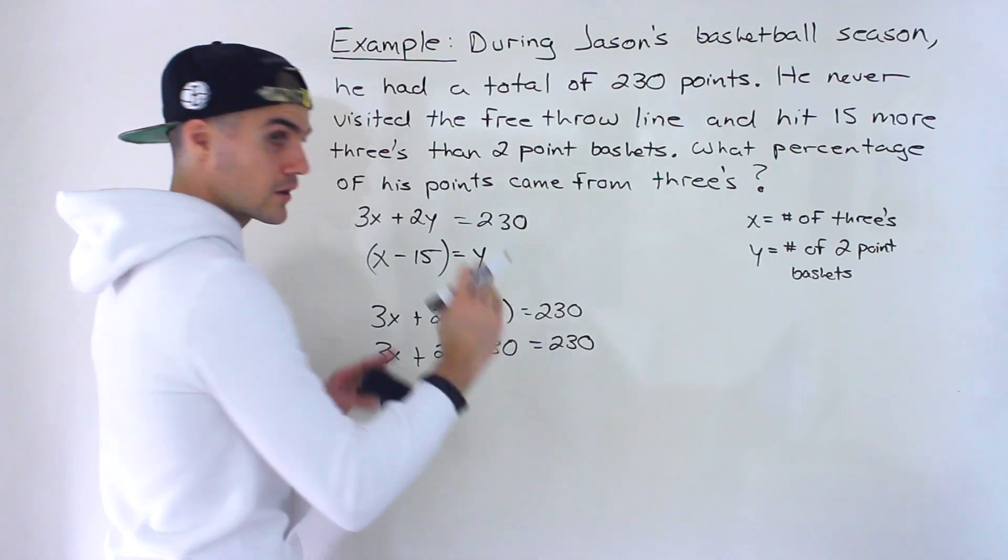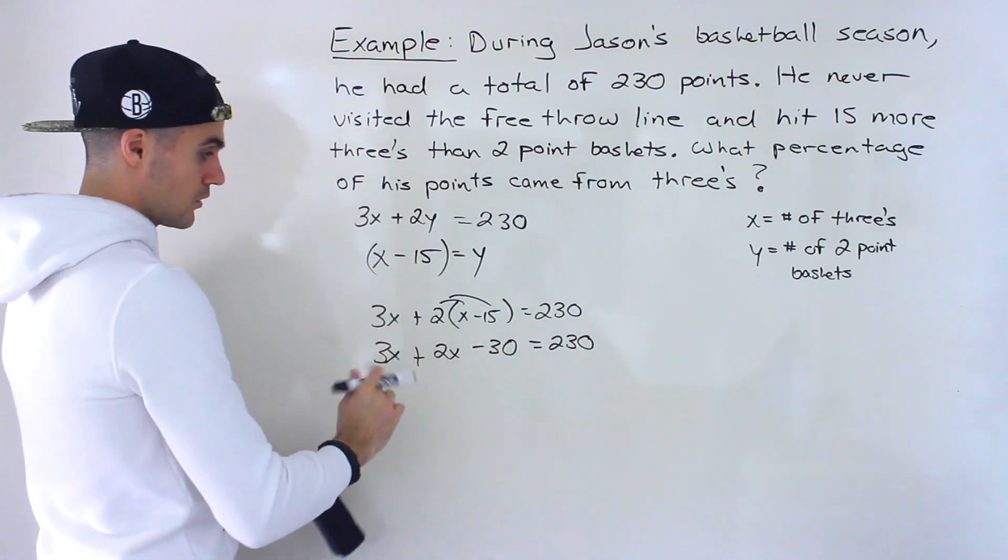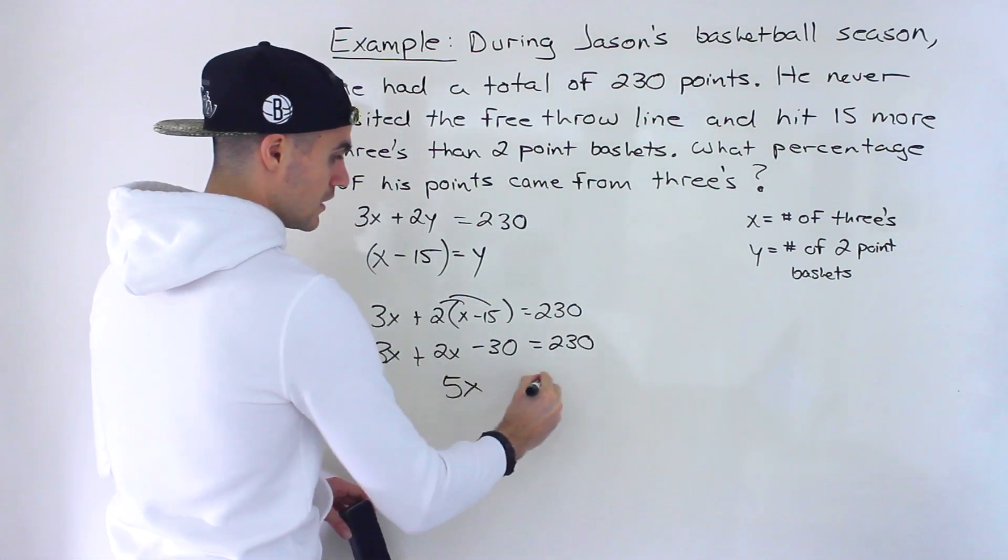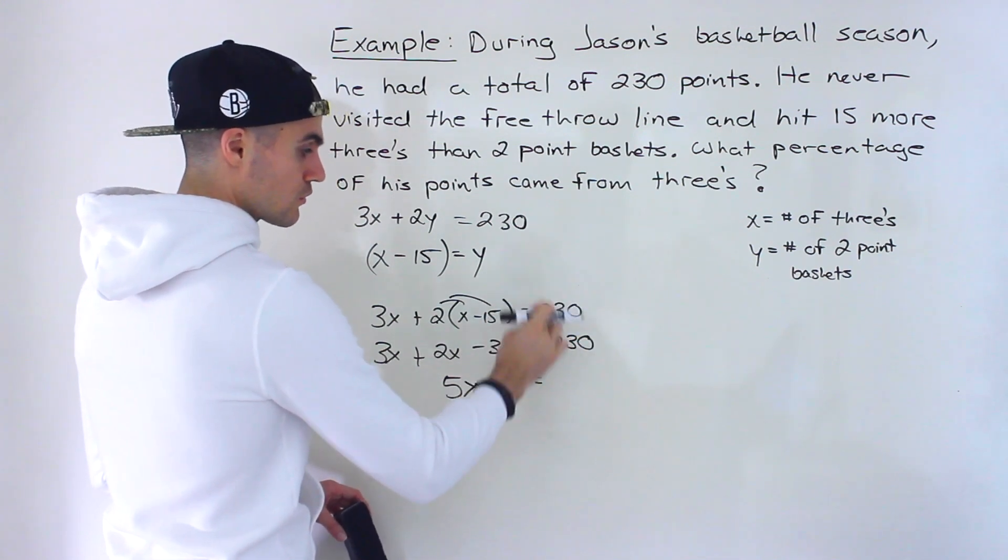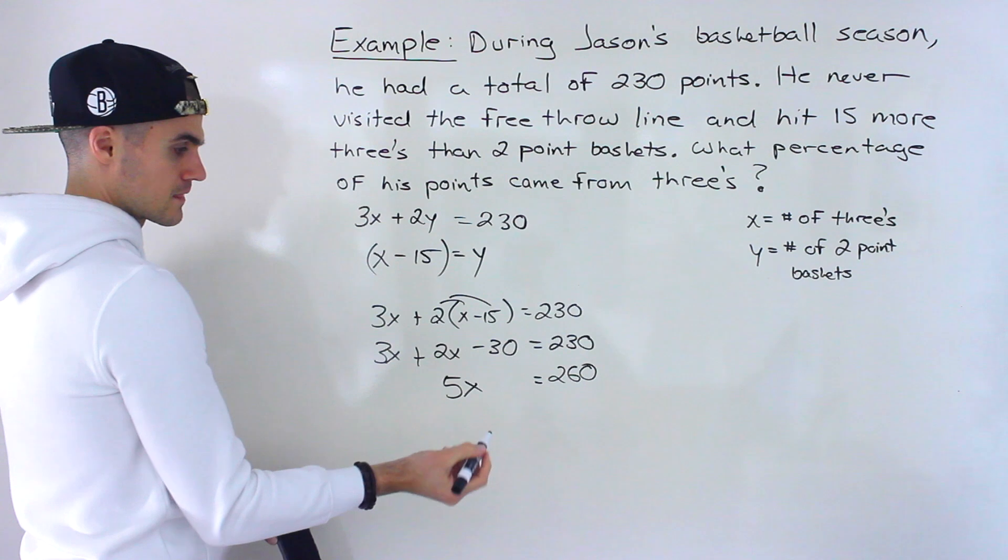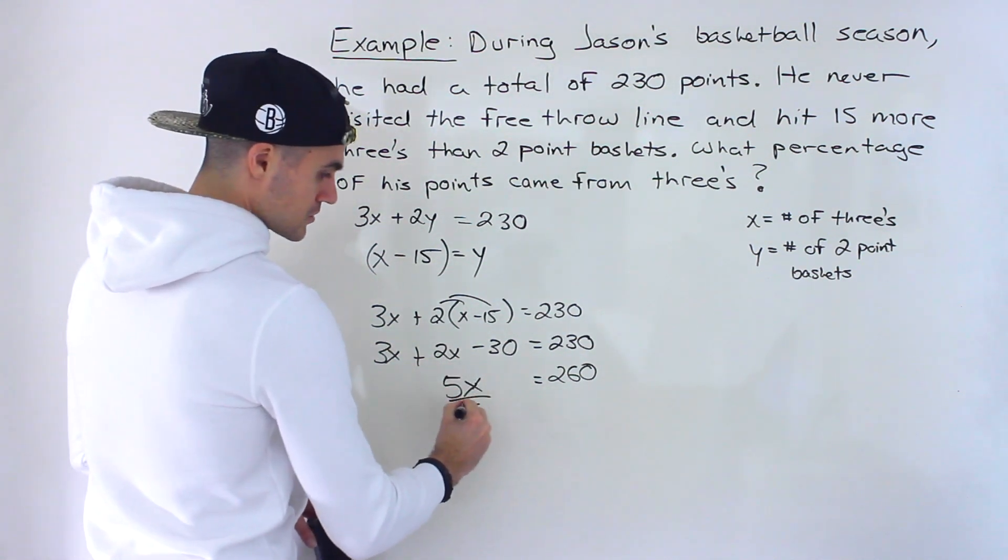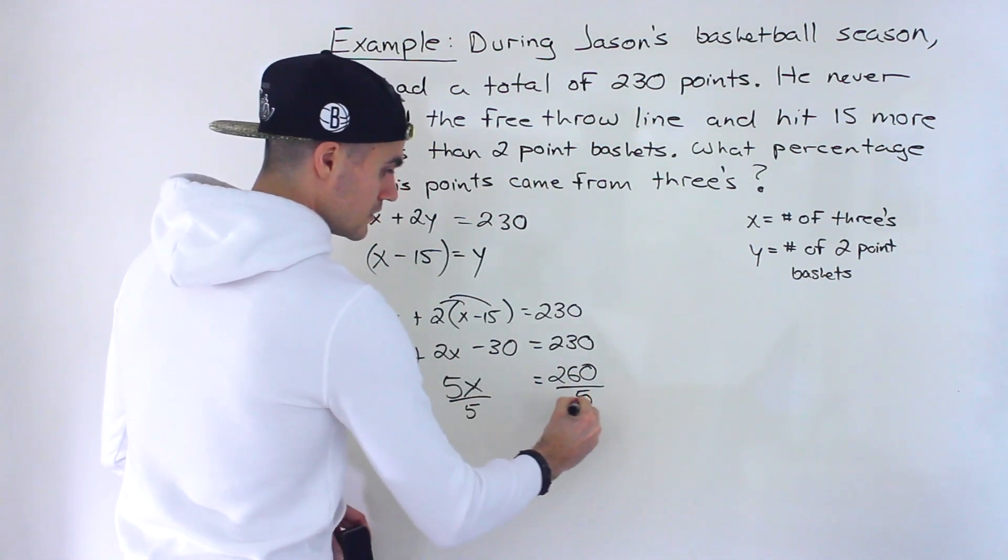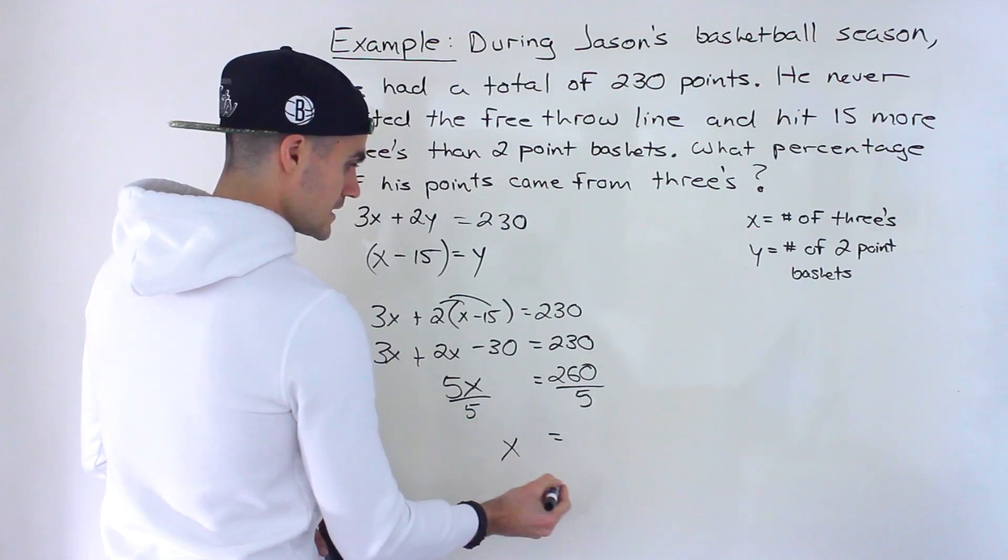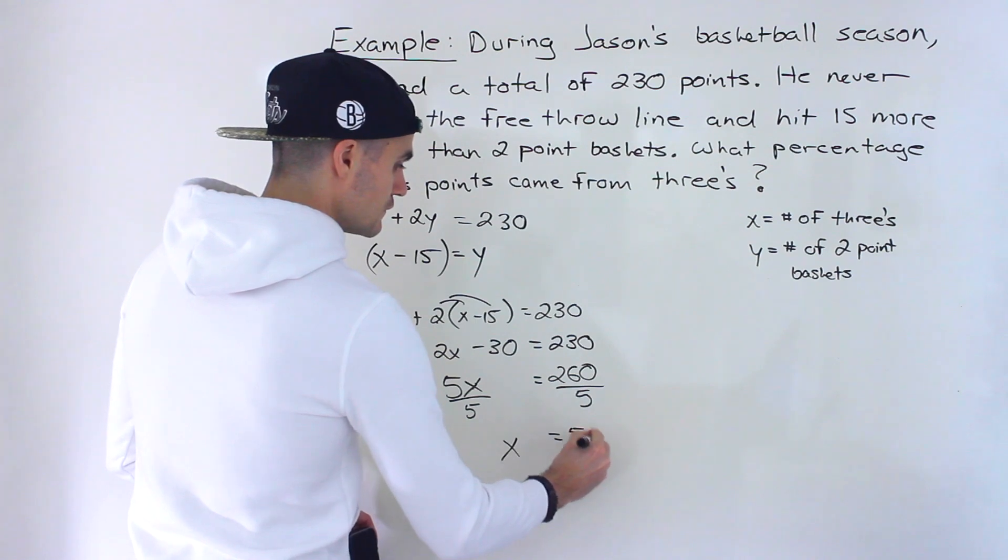Bring the negative 30 over, bring all the numbers to one side, keep all the variables on the other. So 3x plus 2x is 5x. When we bring the negative 30 over, 230 plus 30 gives us 260. And we want to get the x by itself, divide both sides by 5. And we would end up with x equaling 52.